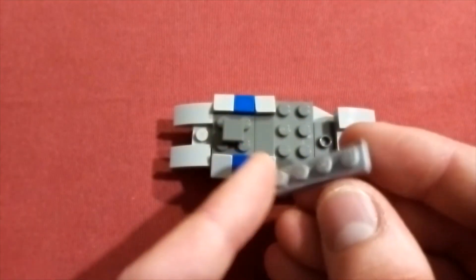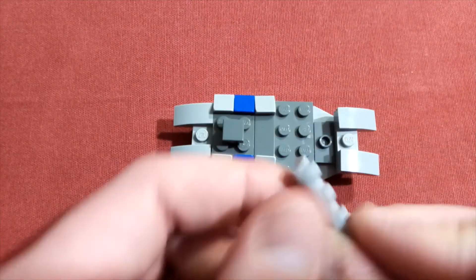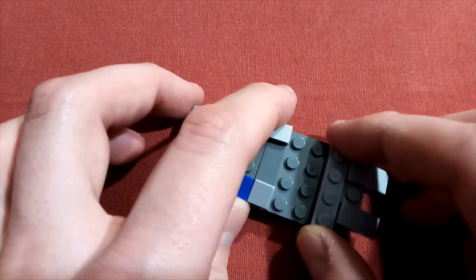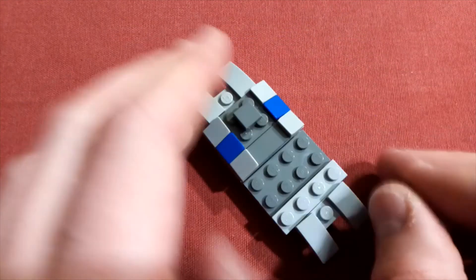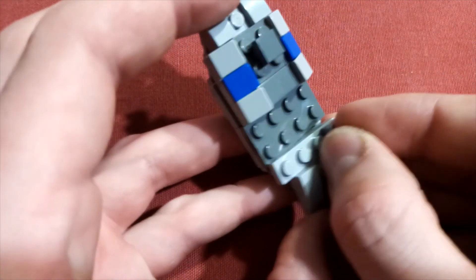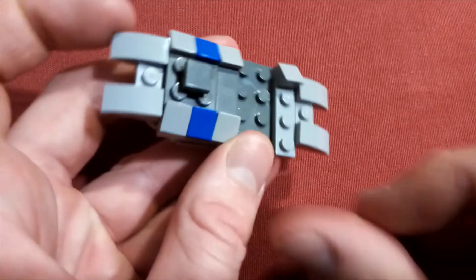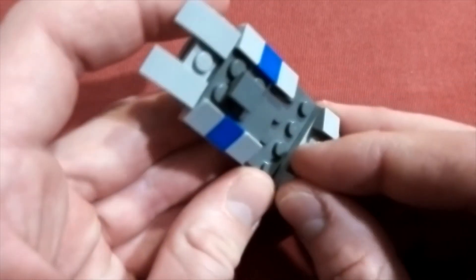Now we'll take a 1x4 light grey plate. Goes on the last remaining jumper plate. And then a cheese slope on either end of that. Just like that.